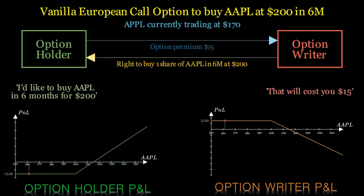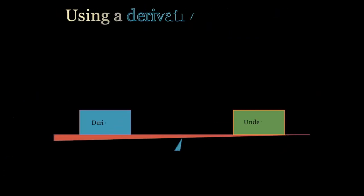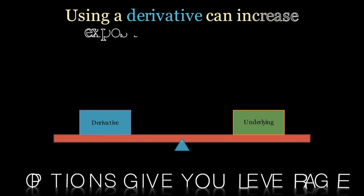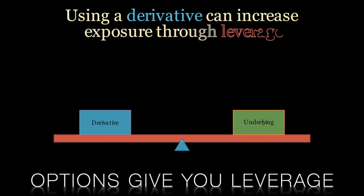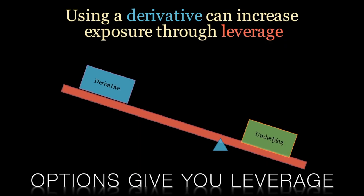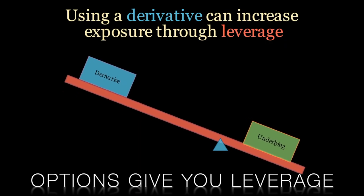A feature of options is that it allows traders to make a lot of money with a relatively small investment. Unlike stocks where you need to buy shares at their full price, options allow you to control a large amount of stock for a fraction of the cost, meaning you can make a significant profit even with a small price movement in the underlying asset.